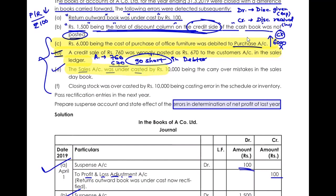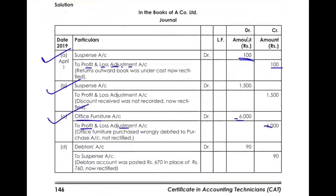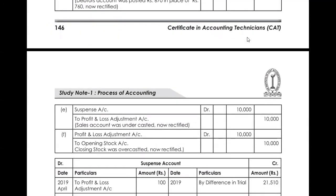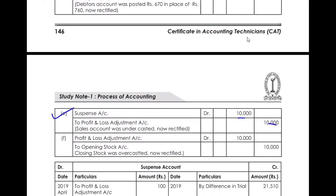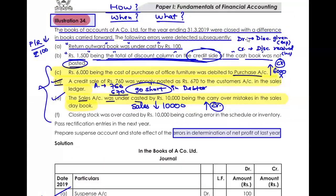Entry E: Sales account was undercast by ₹10,000 — being a carry-over mistake in the sales day book. Sales is undercast by ₹10,000. To correct this, I have to increase sales by crediting the sales account. But my books are closed, so I will use P&L Adjustment account. The entry is: Suspense account debit ₹10,000, to P&L Adjustment account ₹10,000.